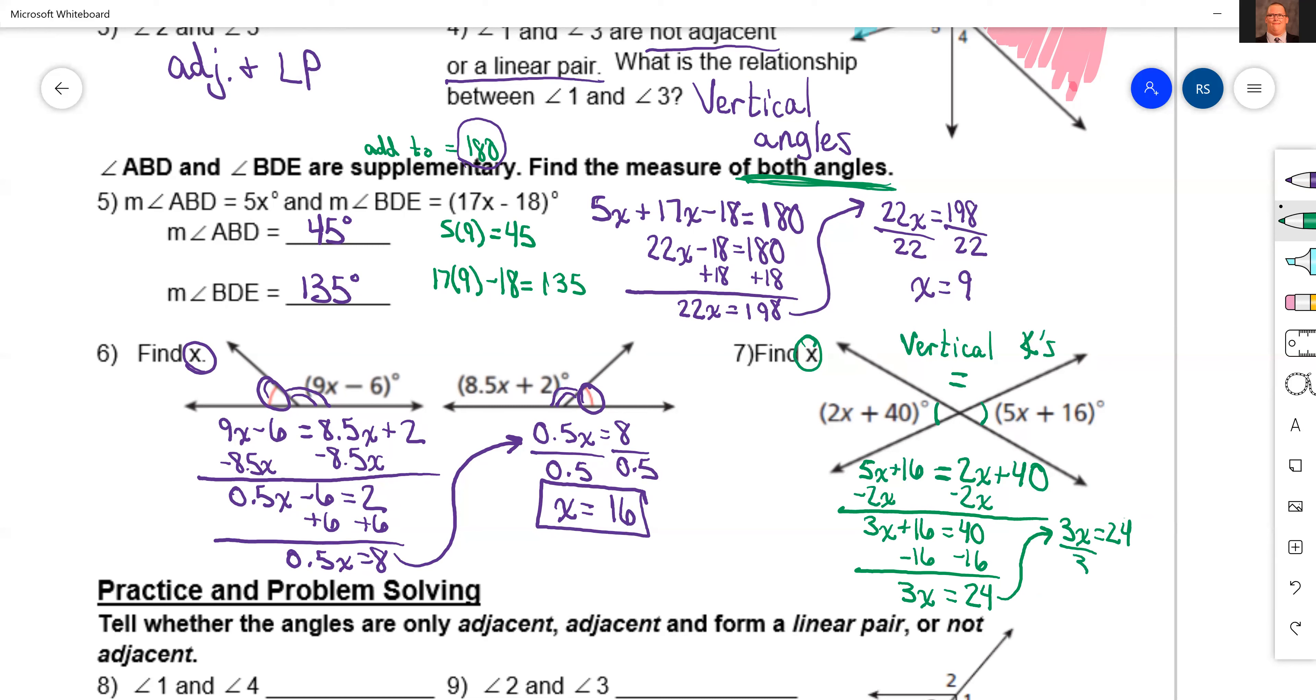Divide by 3 and we get x equals, 24 divided by 3 is 8. And it just has to find x so we're done.